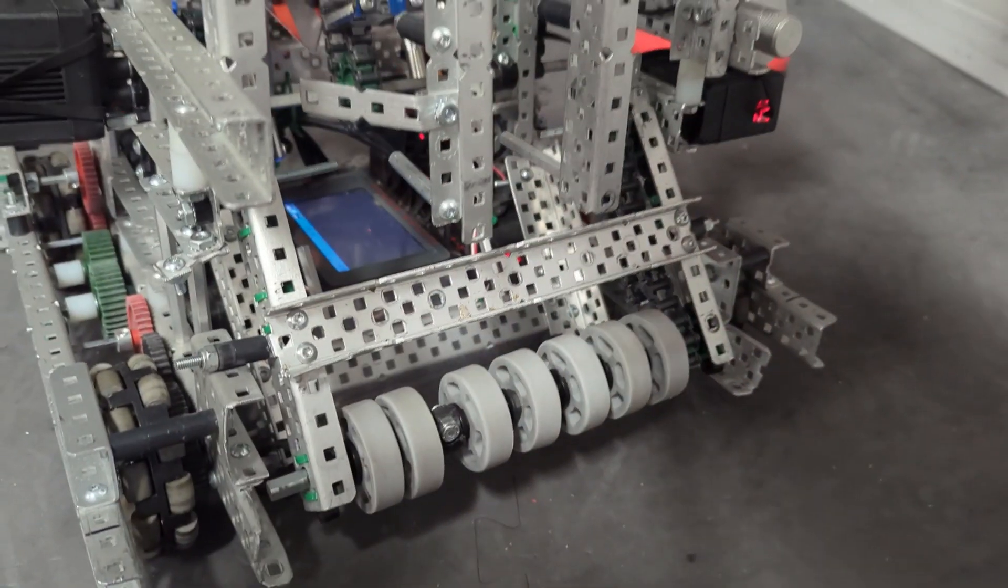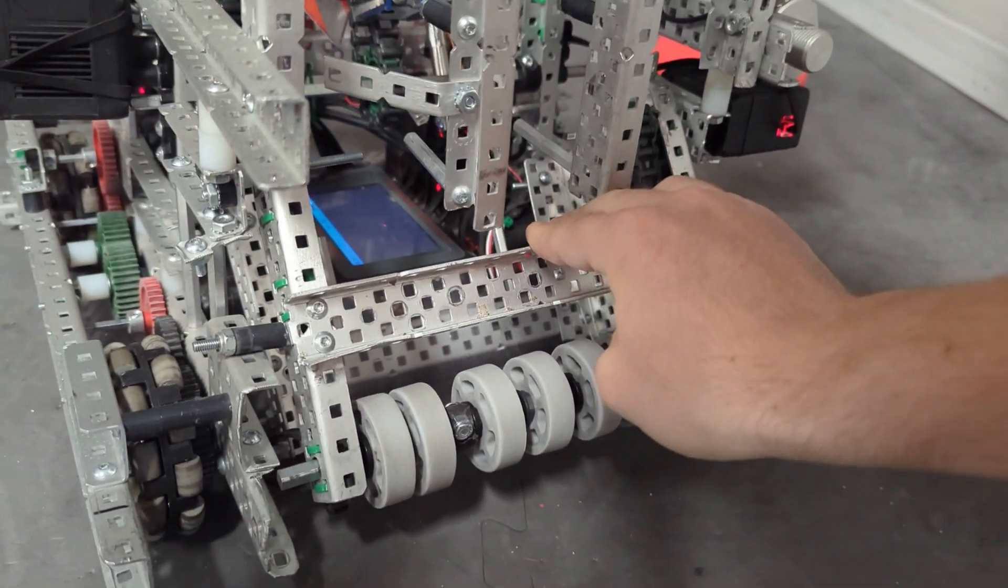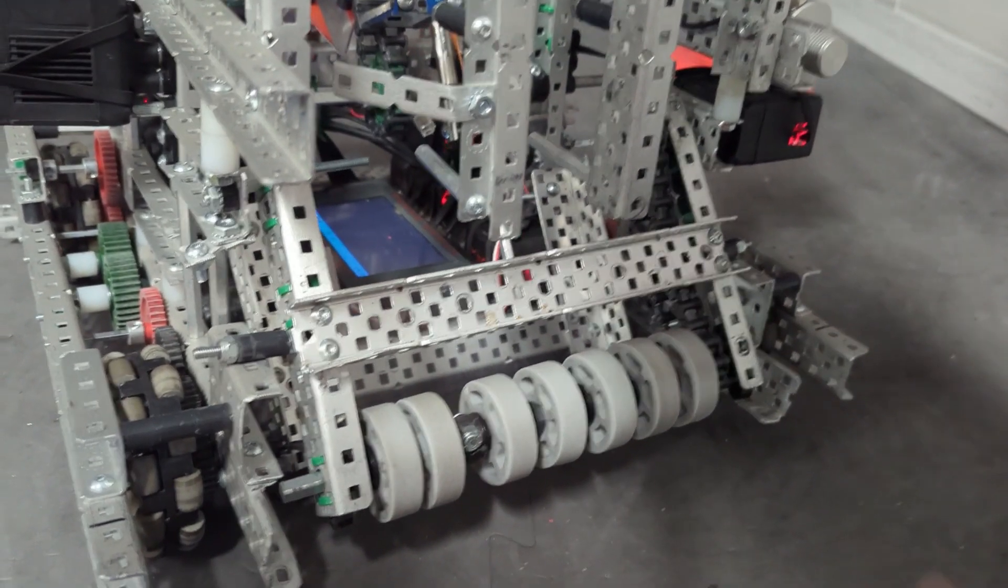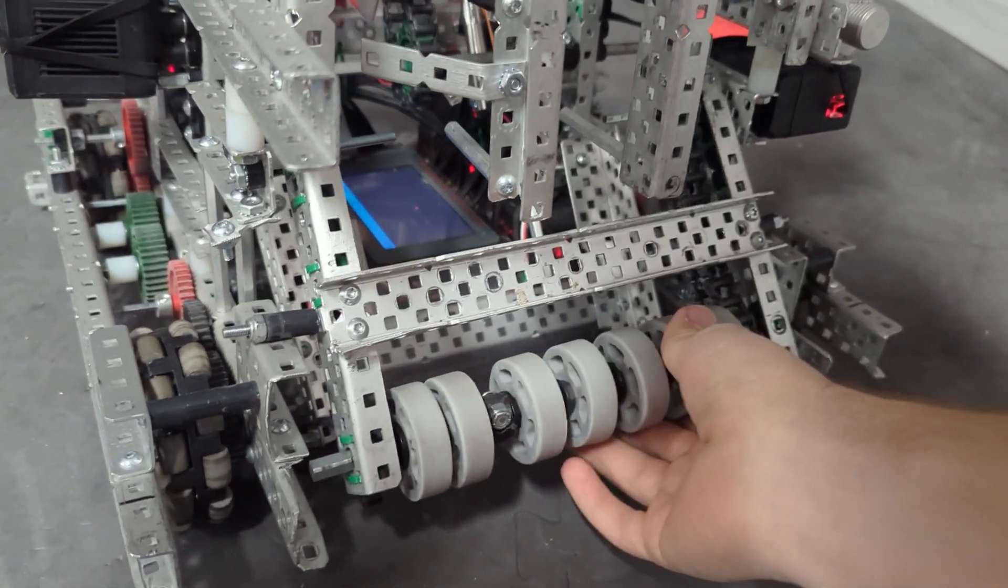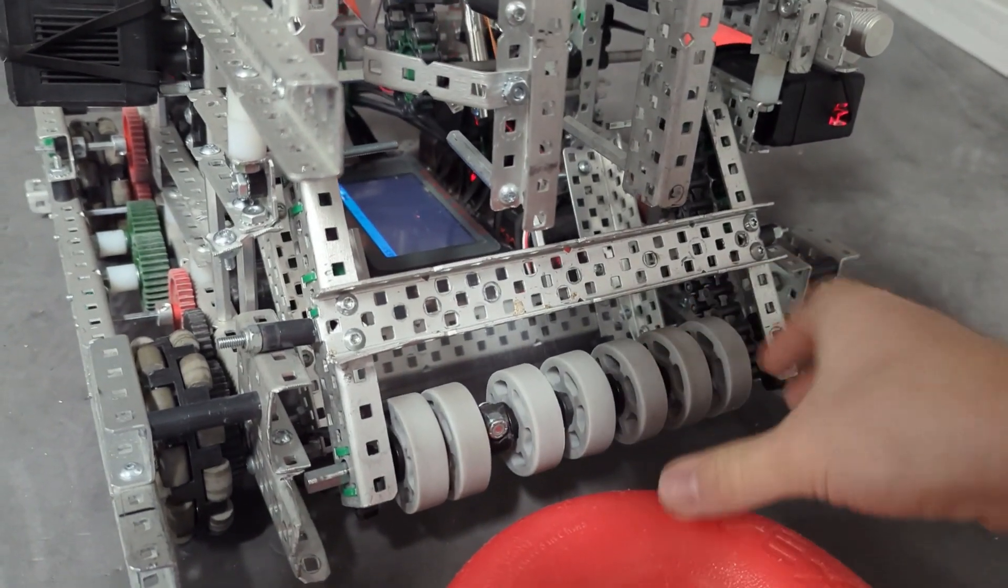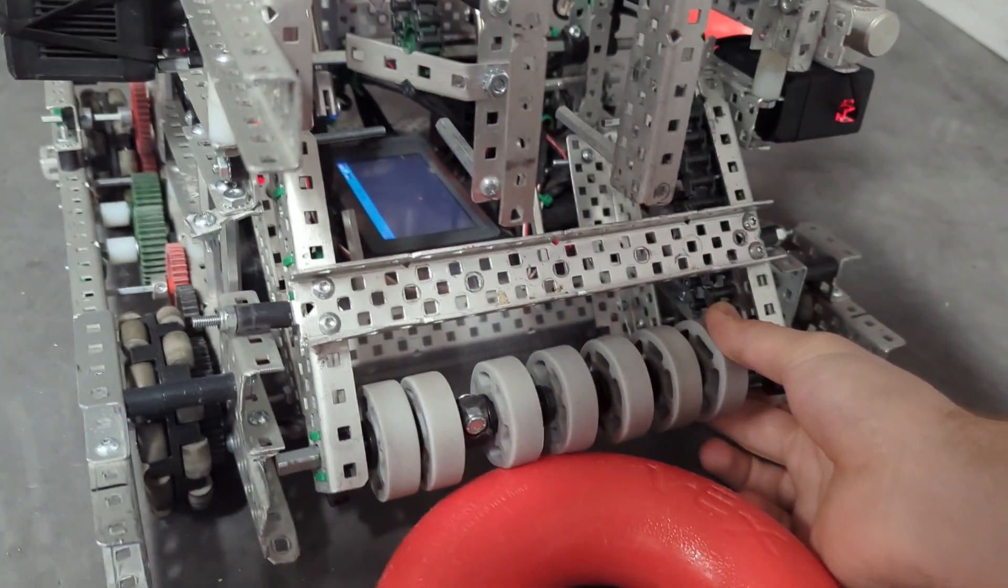Now the second thing you're going to want to do for your intake this year is do what's called a floating intake. Let me show you. See, some intakes are stuck here in this one position, but a floating intake can float up and down like this a little bit. That makes it so that when you grab the ring, the wheels will contact the ring and float up a little bit above it.